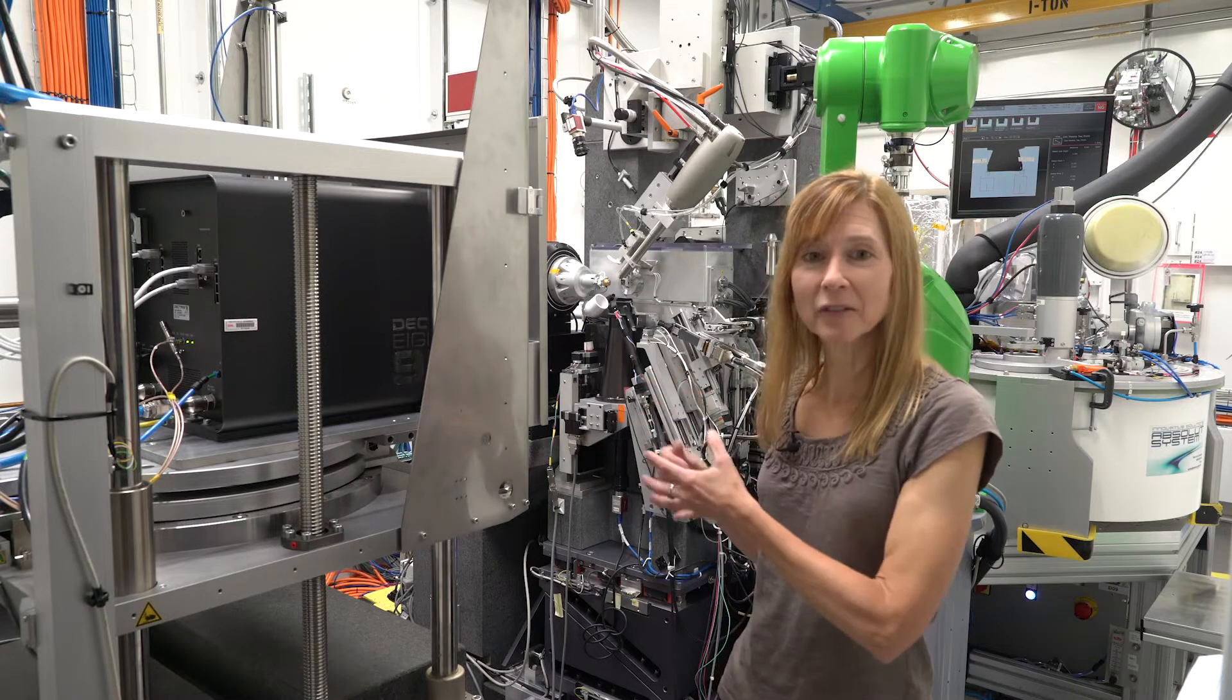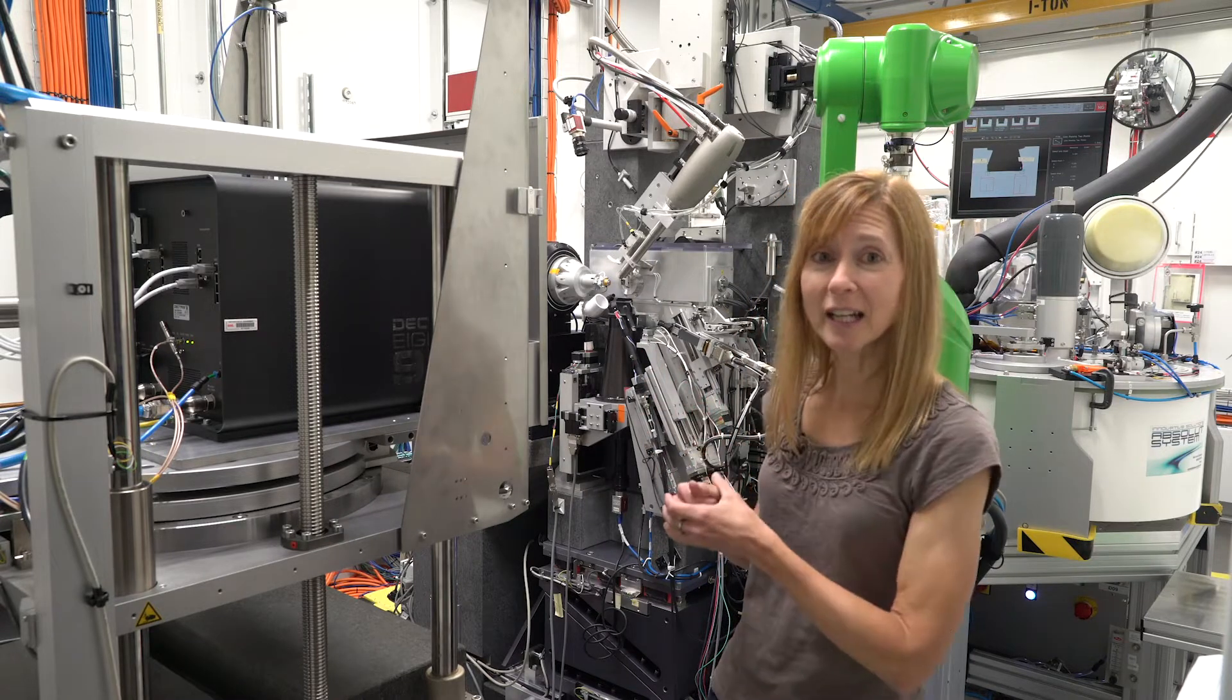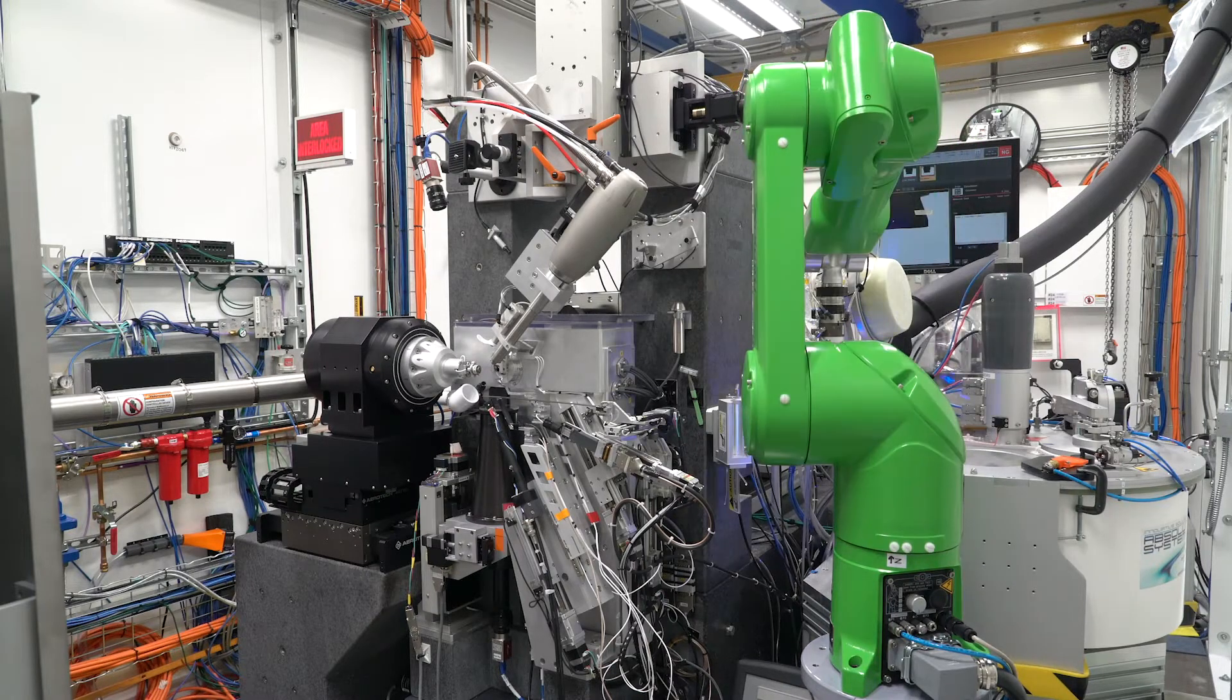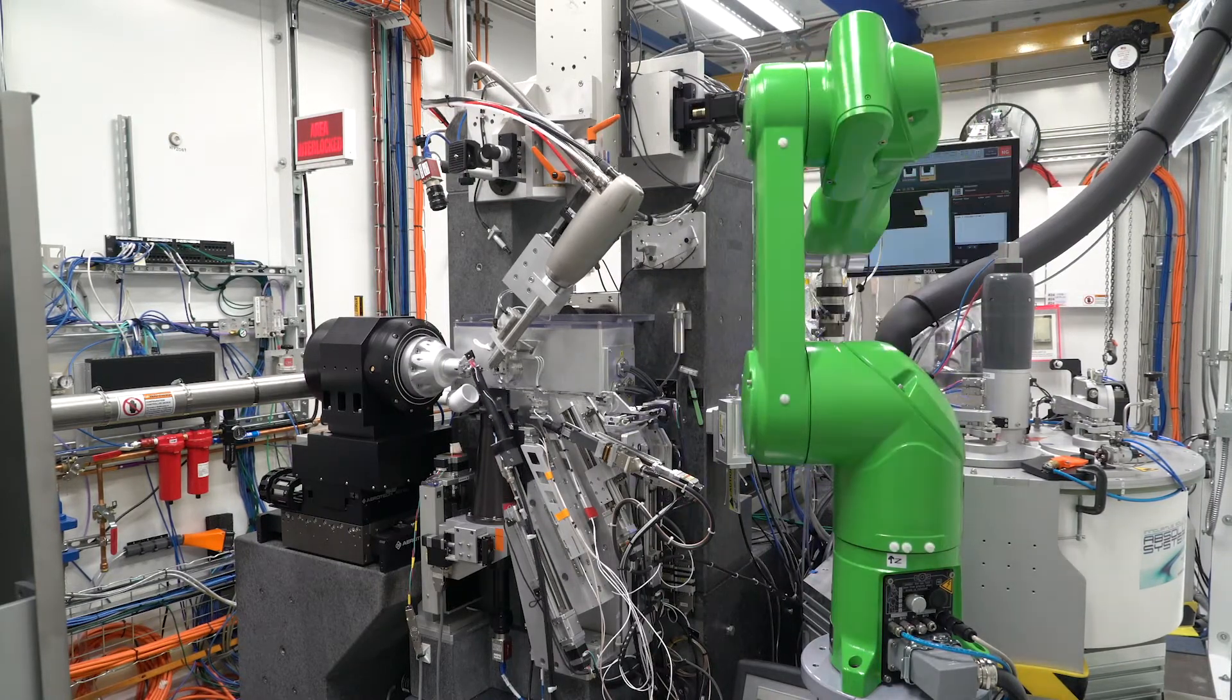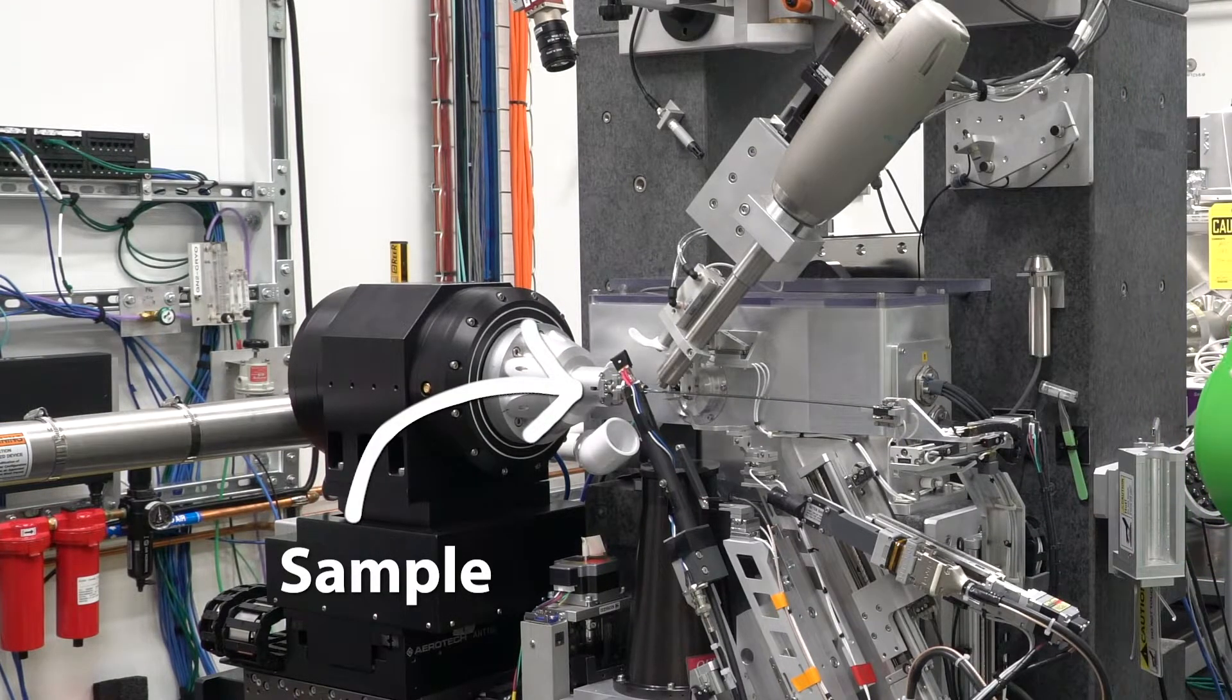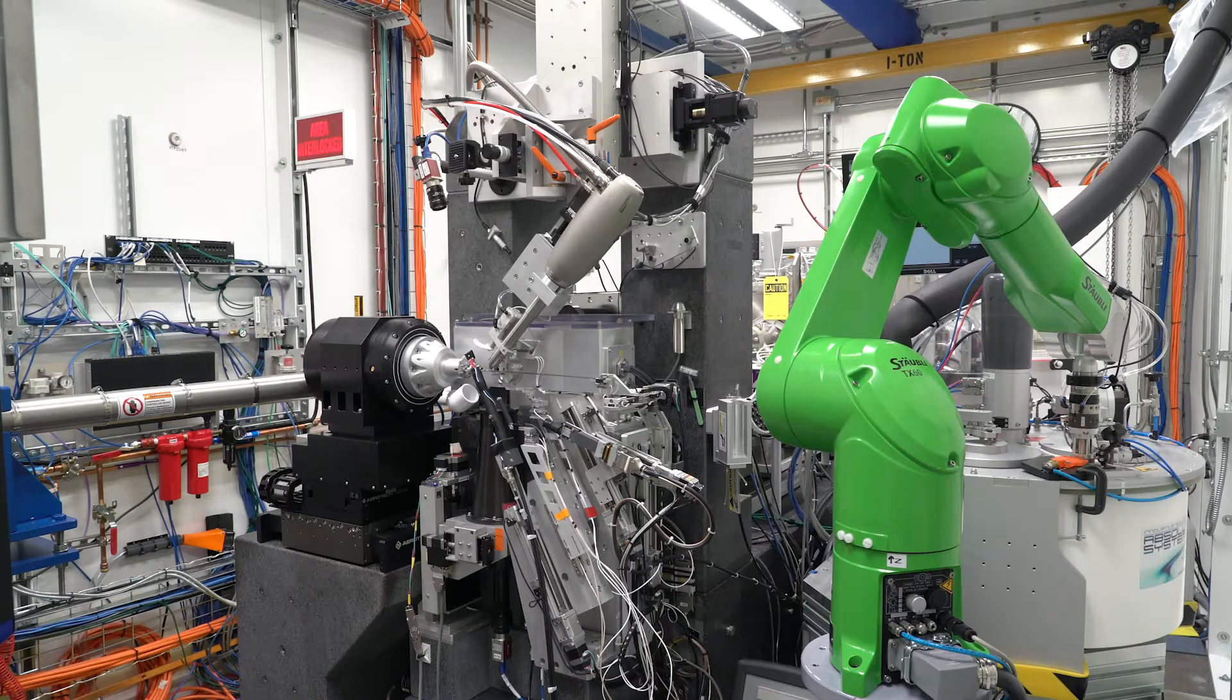Now this beamline is highly automated. Back behind me is a robot that you can see and this robot allows us to study many different drugs very quickly and how each one of those will react with the protein. So basically we have our lock and we have many different keys that we can study the interaction between them using the x-rays and the robot in order to do it very quickly.